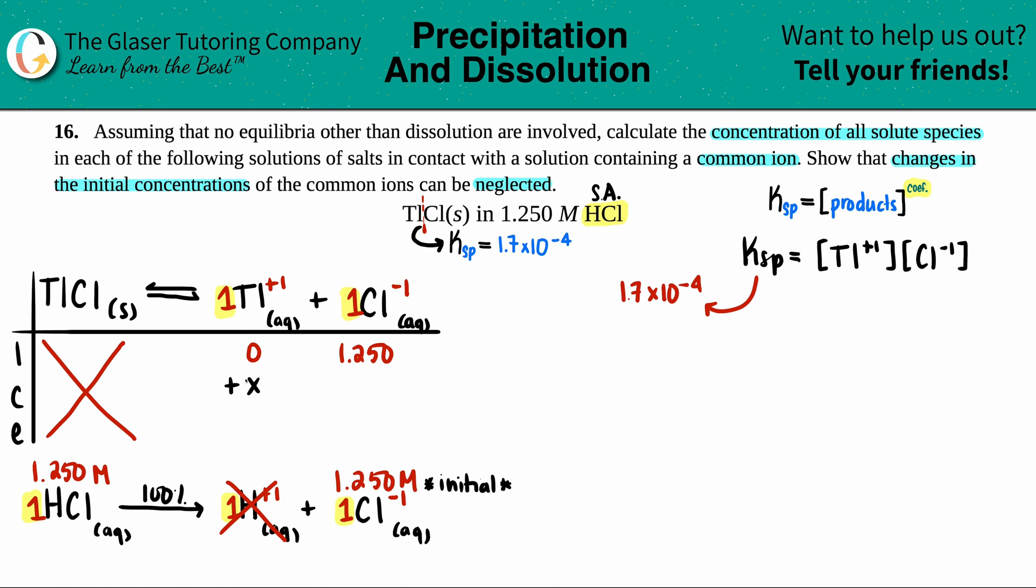Remember, change is your plus x's and minus x's, but the products, you got zero. You could only go up from there. So this would be plus x. Keep in mind that it's a plus 1x. And the same thing here, plus x. Your equilibrium, your e-line is just combination of initial and change. So zero plus x is just x. 1.250 plus x is 1.250 plus x. And these are going to be your concentrations that you're going to plug in here.